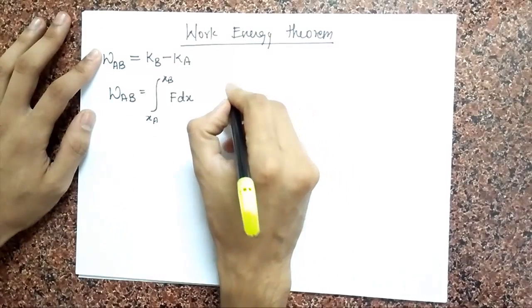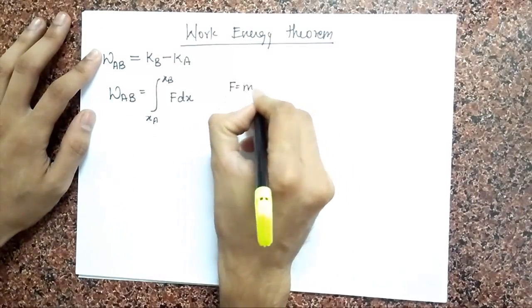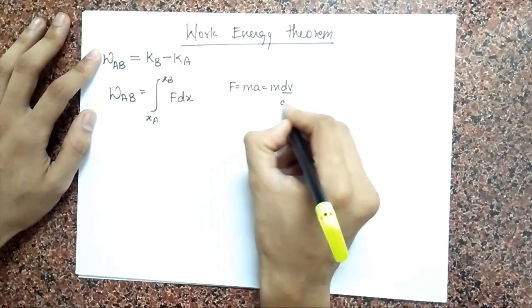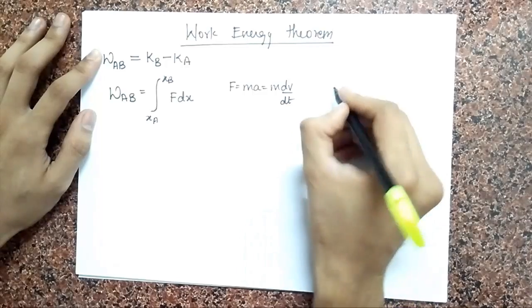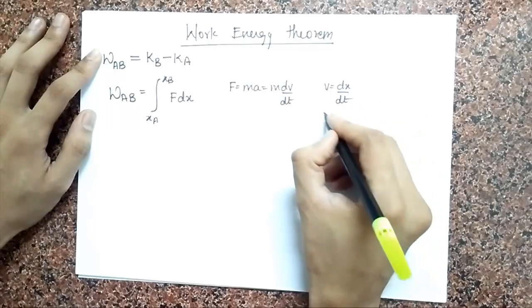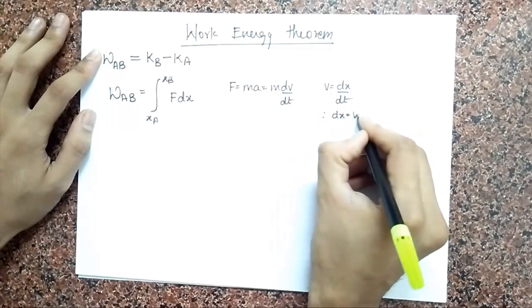So we know F equals MA, which we write as M dV/dt. And we also know the velocity V equals dX/dt, and therefore I can now say dX equals V dt.